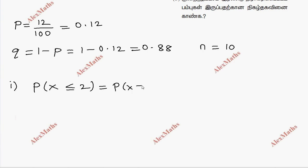Now, P of x equal to 0 plus P of x equal to 1 plus P of x equal to 2. So P of x equal to x is ncx, p power x, q power n minus x.